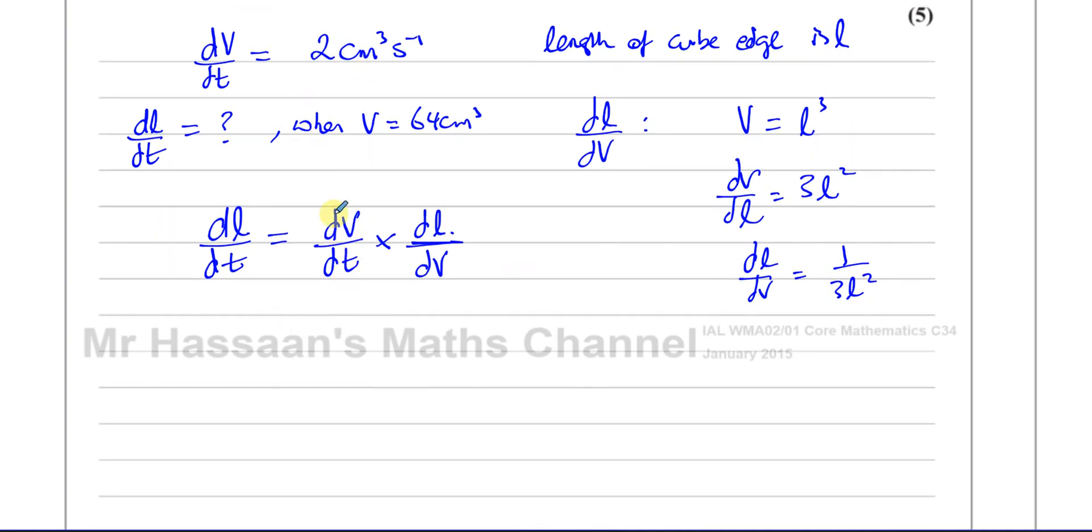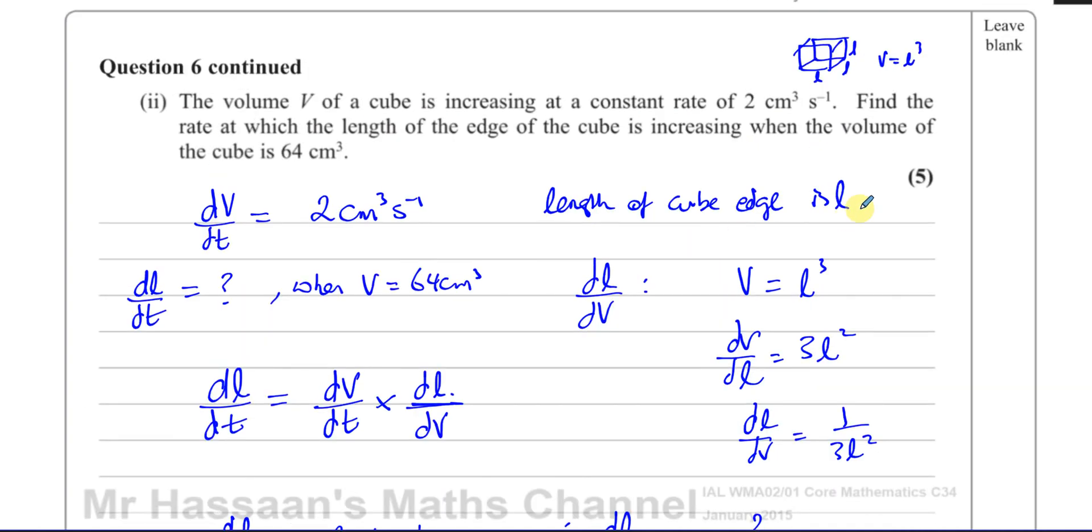So now, I know dV/dt is 2. So I can say dL/dt, which is what I have to find, is equal to dV/dt, which is 2, times 1 over 3L², because that's dL/dV. So therefore, we can say an expression for dL/dt is 2 over 3 times the length of the cube squared. And I want to find when the volume is 64.